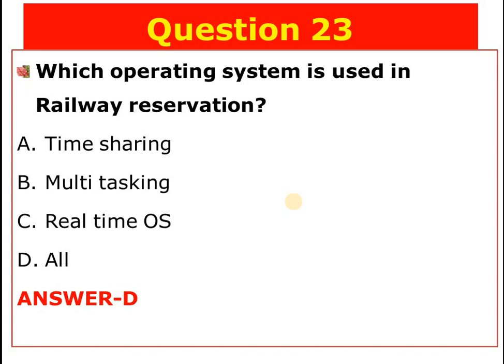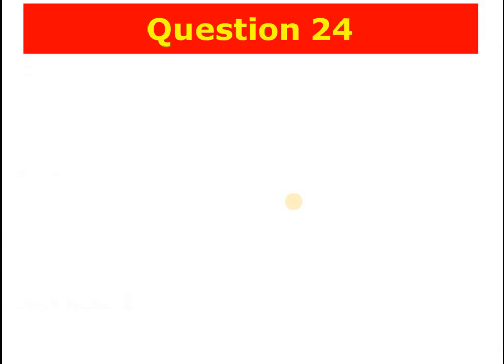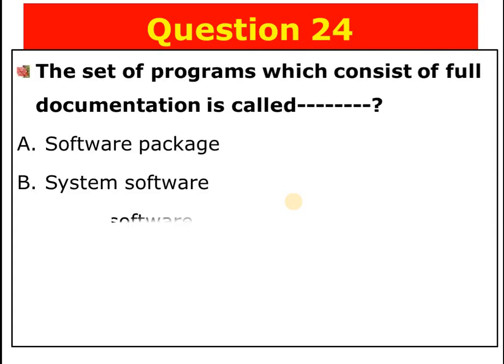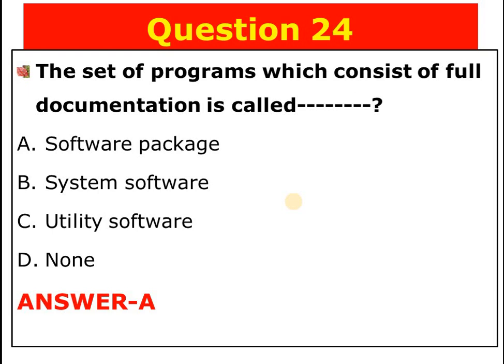Question number twenty-four: The set of programs which consists of full documentation is called blank. A) Software package, B) System software, C) Utility software, D) None of the above. The answer is A — software package consists of full documentation of programs.